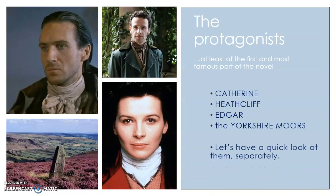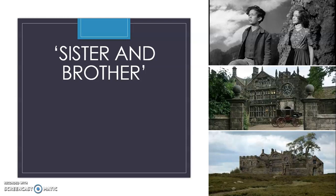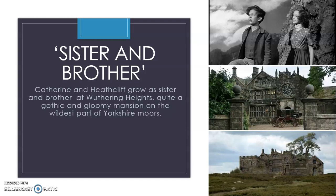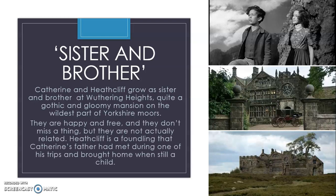Let's look at these three protagonists separately. First, take a look at the couple — Catherine and Heathcliff. Catherine and Heathcliff grow up together at Wuthering Heights, which is a gothic and gloomy mansion on the wildest part of Yorkshire Moors. They grow up happy and free, but they are not actually related by blood. Heathcliff is a foundling, an orphan that Catherine's father found during one of his voyages and brought back home, and he grows up together with Catherine.